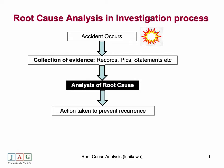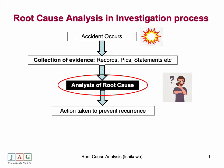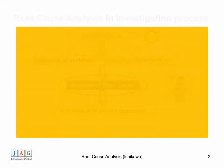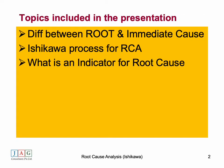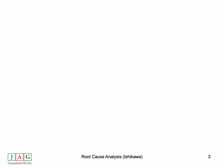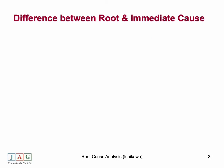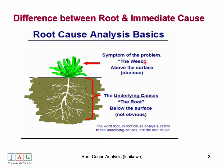Once the root cause has been identified, the next step is carrying out necessary changes as actions to prevent recurrence of the same incident. The key topics we will discuss are: what is the difference between root cause and immediate cause, what is the Ishikawa process for root cause analysis, and what is an indicator for root cause.